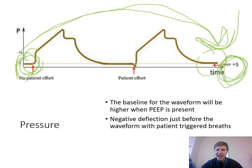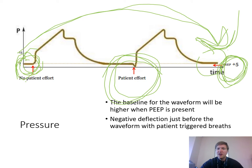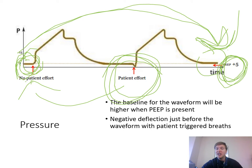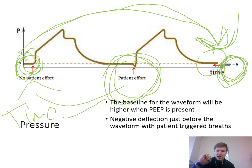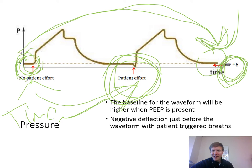If there's a negative deflection just before the waveform, that usually means there's a negative pressure breath generated — patient effort is triggering that breath. If you see that negative deflection, the patient triggered the breath. If there is no negative deflection, the breath is time-triggered. If you can visually see patient effort but don't see it on the graphics, your ventilator sensitivity is not sensitive enough, and you need to adjust the sensitivity setting.